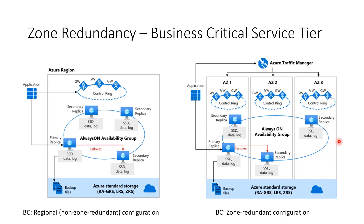Since the Business Critical Service Tier uses Quorum Commit, it can continue to work even if one of the replicas goes down. So one of the zones going down will not cause unavailability, and your database instance will continue to function normally. It's also important to note that Zone Redundant Storage is supported for your backups, ensuring that your backups are available even if a zone goes down.